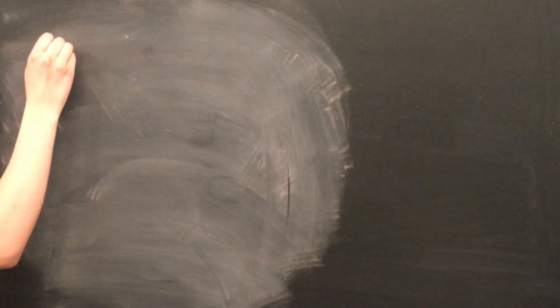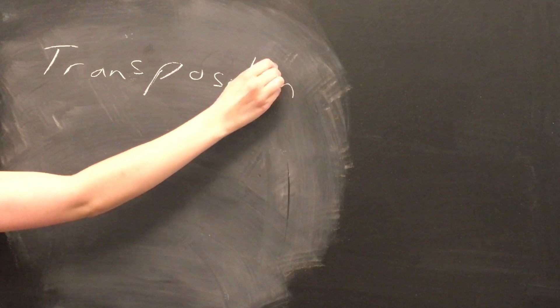So all the transpositions of a given collection of notes can be obtained by rotating these points around the circle. In other words, transposition corresponds to rotation, which is pretty cool.